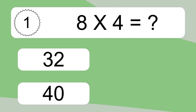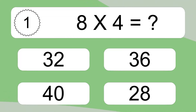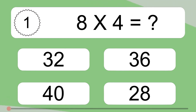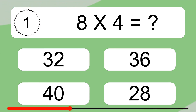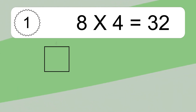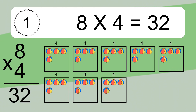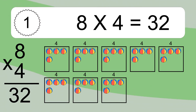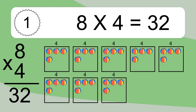8 times 4 equals what? 8 times 4 equals 32. We have 8 boxes and each box has 4 colorful balls inside. If you count all the balls in all the boxes together, you will have 8 times 4 balls. This equals 32 balls.